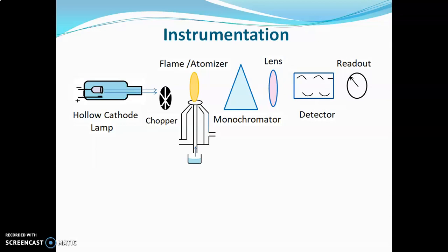The hollow cathode lamp emits line spectra or line radiations which pass through the chopper and enter the atomizer. In the atomizer, some radiations are absorbed by the gaseous metal atoms and some are transmitted towards the monochromator. The monochromator separates these radiations and passes them towards the lens, which focuses them towards the detector. The detector gives a signal, and the signal is recorded by the readout system. This is the overall instrumentation of AAS.